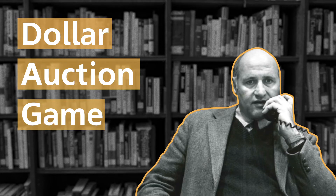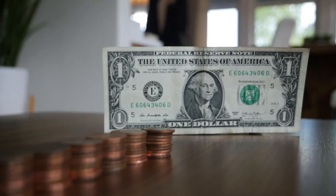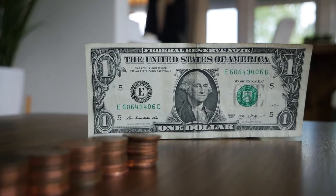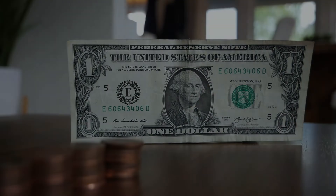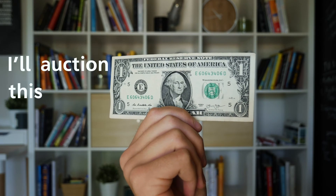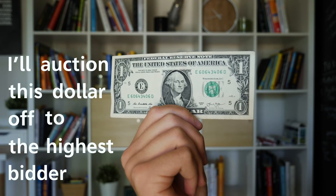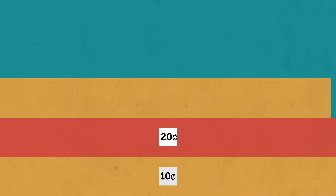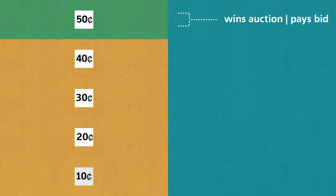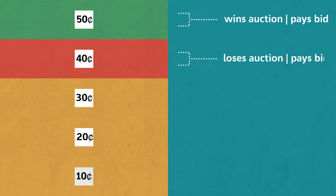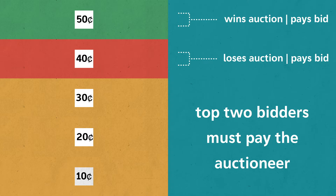The game is simple enough, there aren't any tricks, and players know the rules from the start. People end up paying absurd amounts for a dollar only because of their own irrational behaviors. One person holds up a dollar bill to a group and says, 'I'll auction this dollar off to the highest bidder.' The highest bidder wins the dollar and pays their bid to the auctioneer. But there's one key difference: the second highest bidder must also pay their bid, even though they get nothing in return.